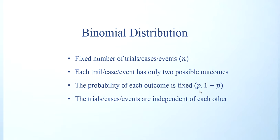The probability of each outcome is fixed. That means the coin, if the coin is a fair coin, each time you toss the coin, the probability of showing the head remains unchanged. It is 0.5. And the trial case and events are independent of each other. That means they don't depend on each other.